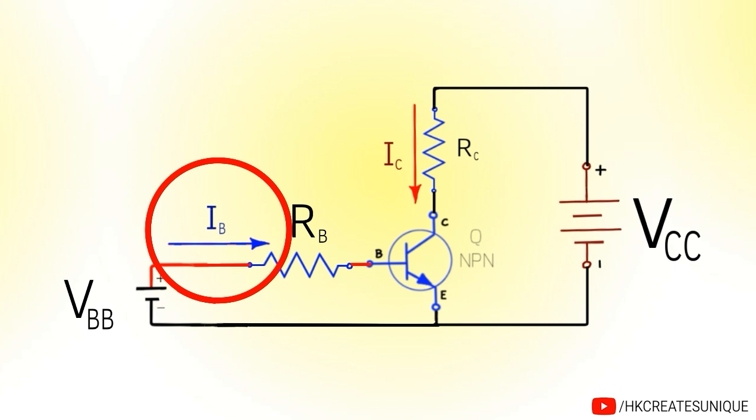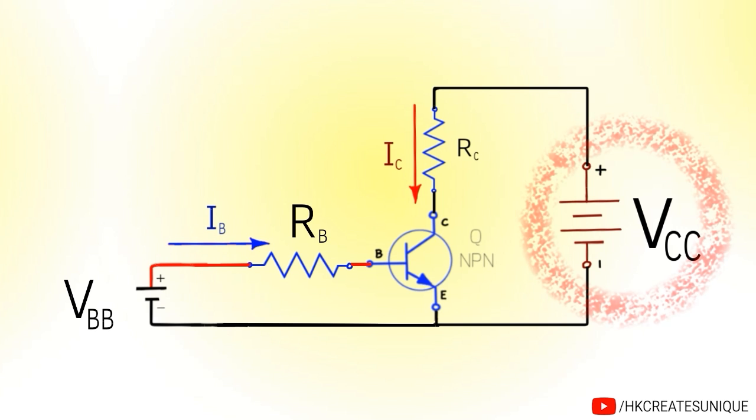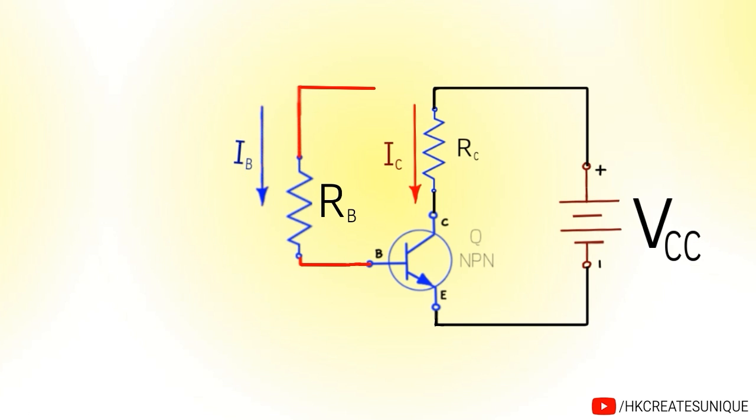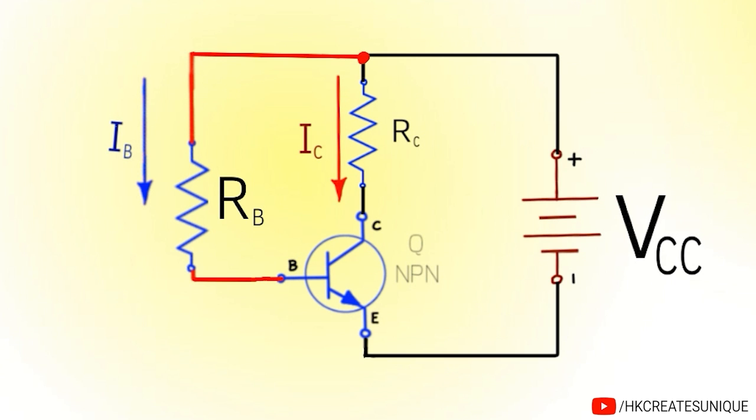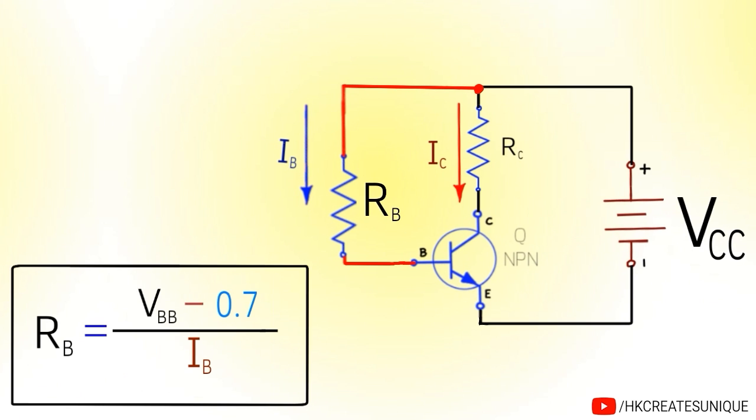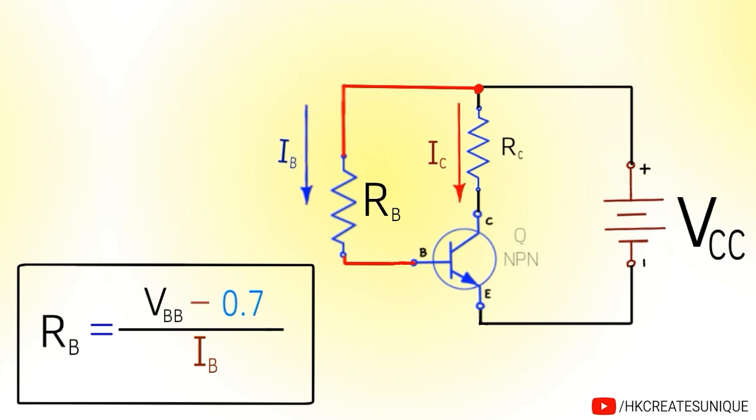The base current can also be provided by the same voltage source that powers the load. This is useful in making logic gates and other circuits. Same equations can be used to find the value of base resistor. But this time base voltage is VCC.